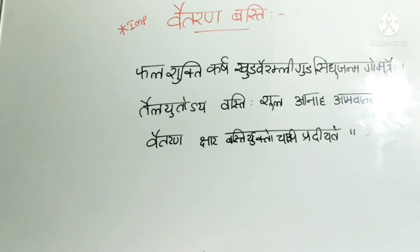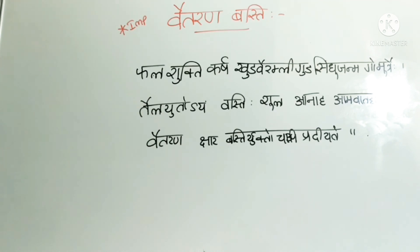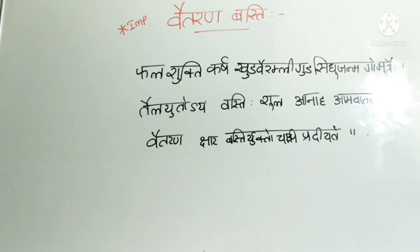From a viva point of view, you should add this explanation about the name to impress your examiner. This completes the Vaitarana Basti — its preparation, indications, and action. The action is lekhana karma. If you are thorough with the shloka, you can recite it; otherwise, you can mention the composition and indications as discussed.